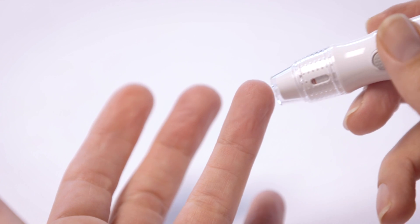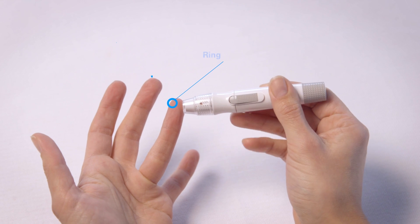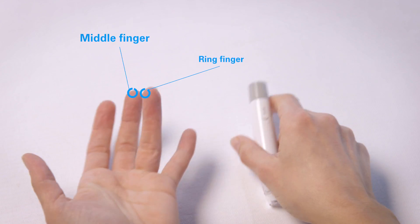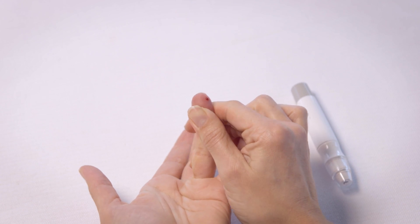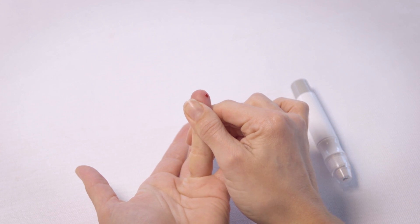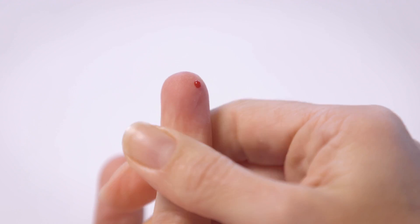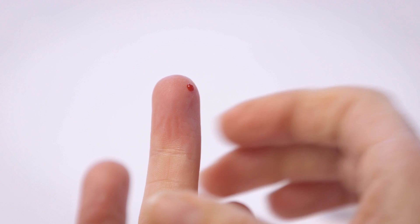Place the lancing device on the middle or ring finger and press the release button of the lancing device. Massage the finger from hand to fingertip. Take care that the blood drop has the right size and is spherical, similar to a teardrop.